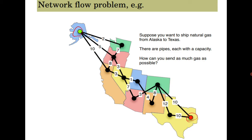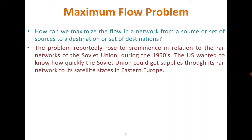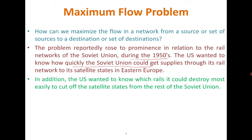The question is: how much gas or oil can be sent from one place to the other? There are many possibilities. For example, up to a certain point you can reach with six liters, or with eight liters, but then you are stuck because only six liters can go forward. This problem is very relevant from the Second World War — reported in 1950 — where the US wanted to know how quickly the Soviet Union could get supplies through its rail network to its satellite states in Eastern Europe.